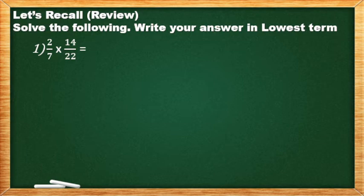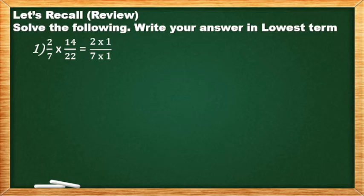Para i-solve natin ito, gagamitin natin ang prime factorization. It means we need to find the prime factors of all numbers na nakikita natin sa numerators at saka sa denominators. The prime factor of 2 is 2×1. The prime factor of 7 is 7×1. Times, the prime factor of 14 is 7×2. And the prime factor of 22 is 11×2.